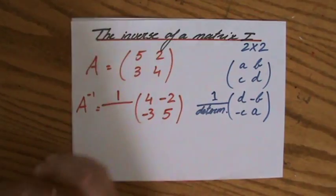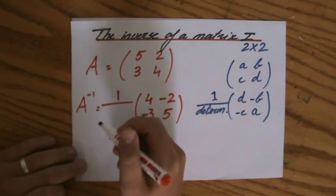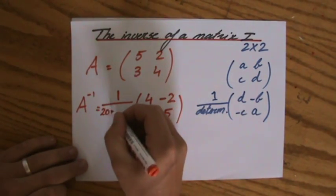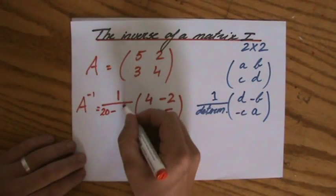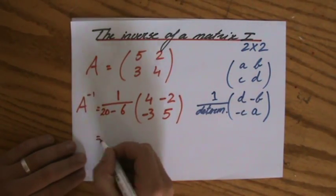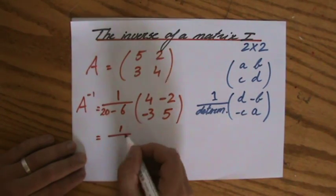AD. So, 20. Five times four. 20 minus BC. Two times three is six. So, let me just simplify that.